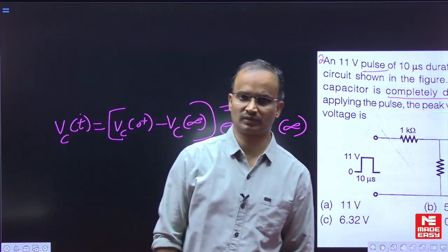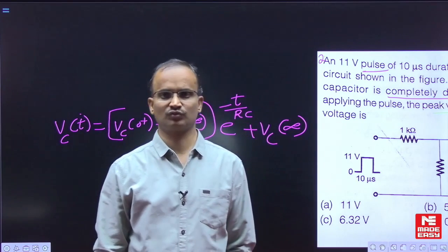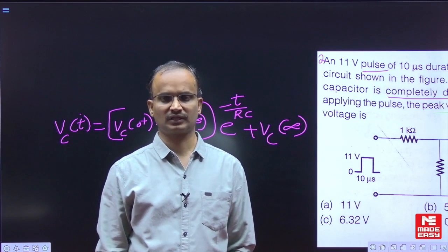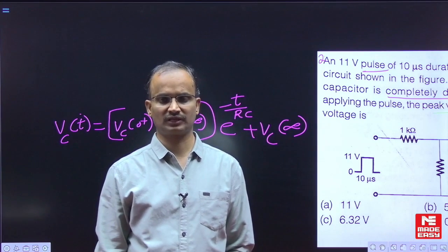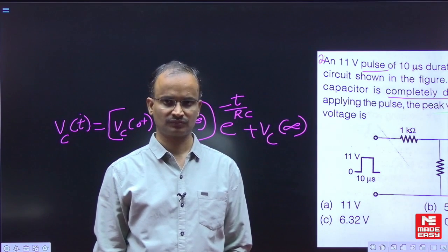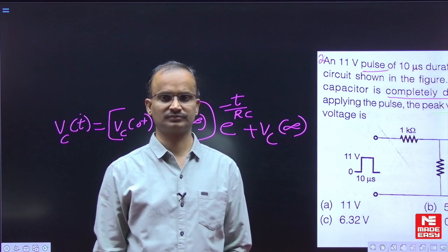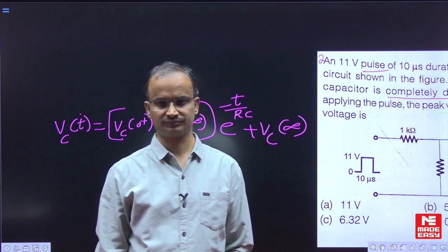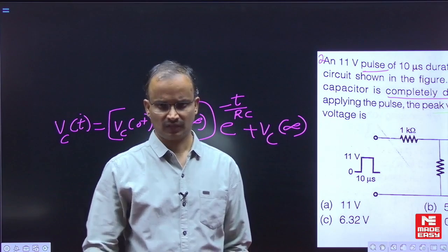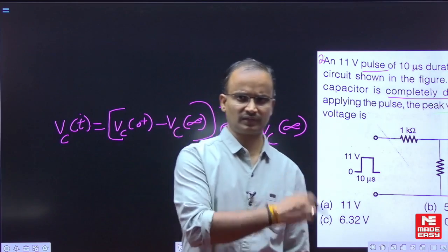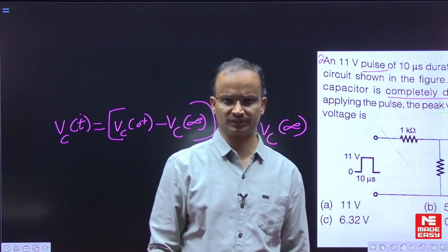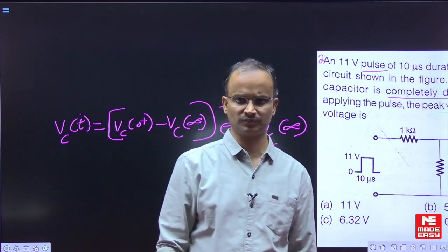To conclude our required answer, first let us assume that the given input exists up to infinite seconds. With that assumption, let us first obtain the general equation. After that, for the given pulse input duration, let us find out the voltage.